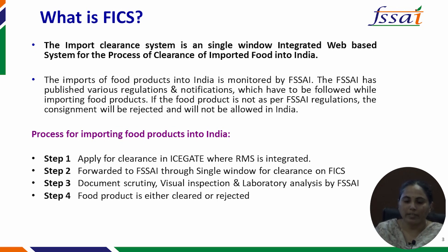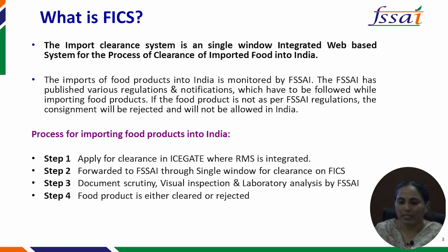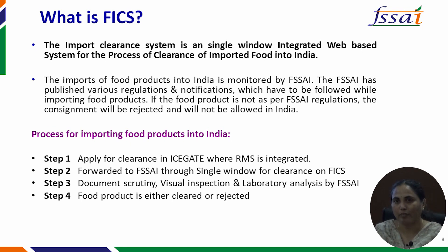The process of importing food products into India can be broadly categorized into four steps. The importer, custom house agent, or custom broker will apply for clearance of the consignment once it lands at a particular port. This application is initially submitted in the customs online portal, the ICE gate, where the RMS or Risk Management System is integrated. Once the consignment information is filed at ICE gate, the bill of entry is generated and the message is forwarded to FSSAI through the single window integrated platform — the FICS. The single window platform is implemented by the CBEC for both export and import clearance.